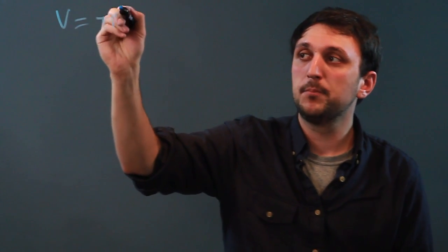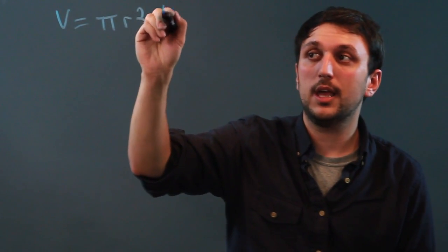So first, let's explain what the volume of a cylinder equation is, and that is volume equals pi r squared h.